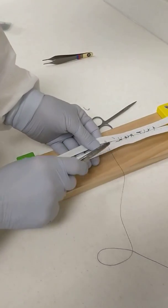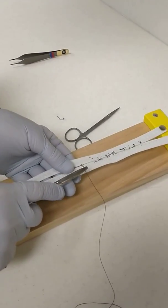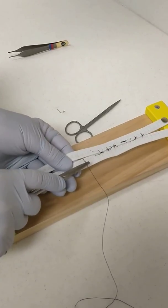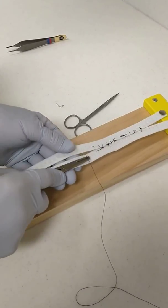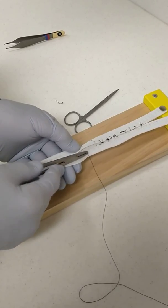First of all, a vertical mattress suture is used to pull the tissue up. And you take a very large bite on your initial pass.